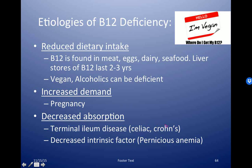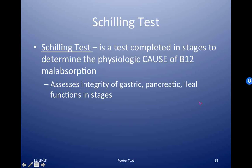The Schilling test is a test completed in specific stages to determine the actual cause of the B12 malabsorption. Basically, the stages of the test allow you to assess the integrity of gastric, pancreatic, and ileal function. This is a really good diagram from one of my favorite books in PA school called Clinical Pathophysiology Made Ridiculously Simple.